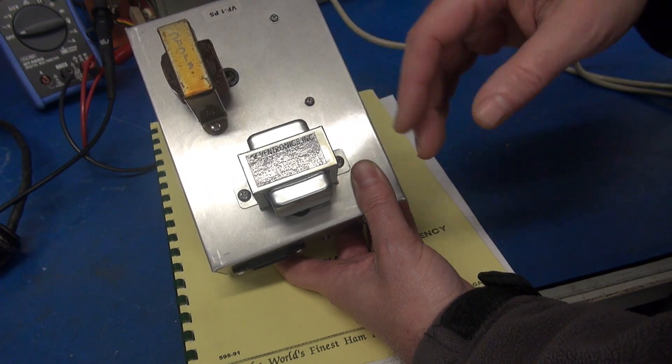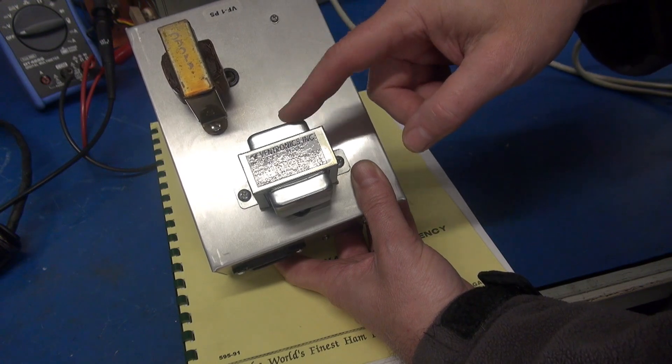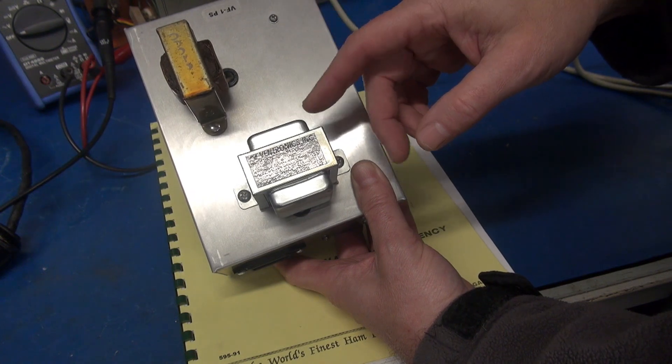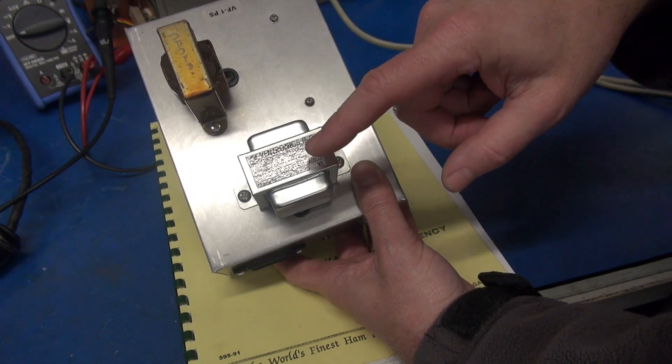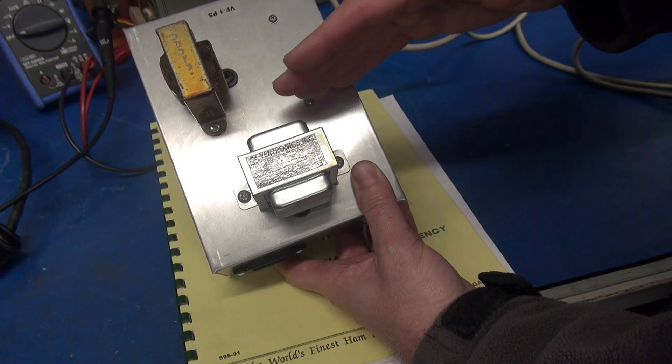The voltage regulator in the VFO, in this case it's an OA2, will regulate the screens of the oscillator tube. So this input voltage can vary and have no effect on the VFO's performance. You just don't want to go much below 150 volts because the OA2 needs some headroom to regulate.